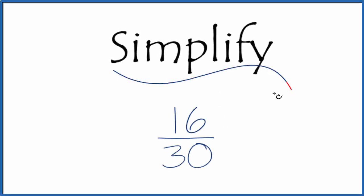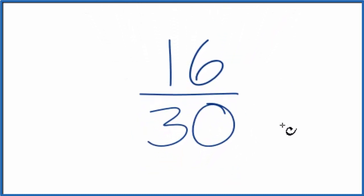In this video we'll simplify the fraction 16 30ths. So what we're trying to do is take this fraction 16 over 30, find another fraction that's equivalent that would have the same value but it's written in lowest terms.